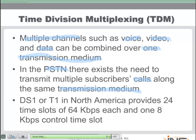With leased lines, you buy dedicated bandwidth — an absolutely dedicated circuit for your network. The circuits sold are measured in bandwidth and called DS1 or T1 circuits in North America. A T1 provides 24 time slots at 64K each, plus one 8-kilobit-per-second control time slot. Time division multiplexing circuits make up our leased line options and can be used for wide area networking in our infrastructure.